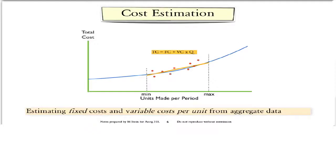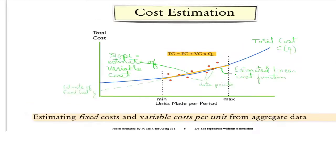This diagram shows pictorially what happens during the cost estimation process. The idea is to try to come up with an estimate of the cost curve, which is the curved blue line. But in order to do that, we start with the data, which are the red dots, to estimate the orange line, which is the linear cost function.